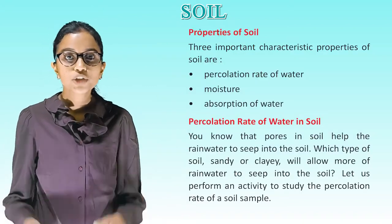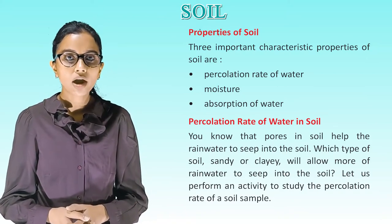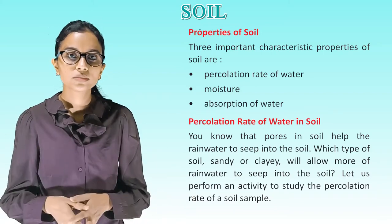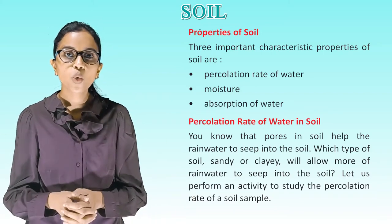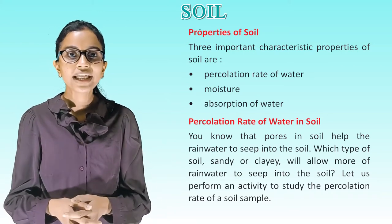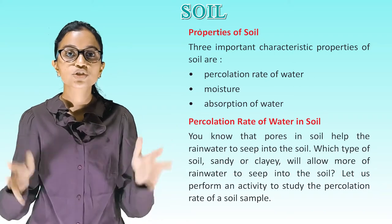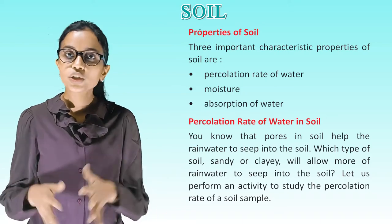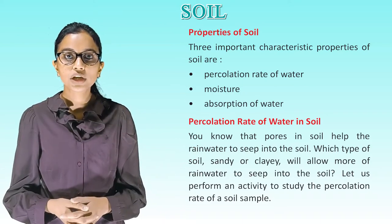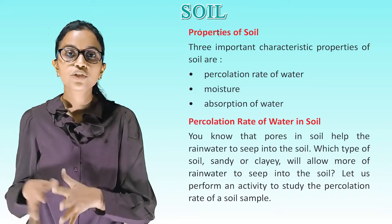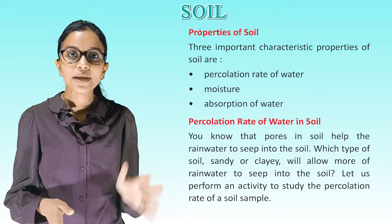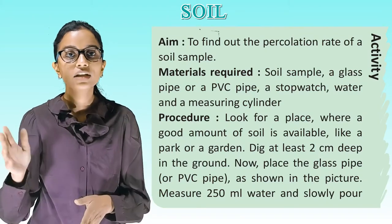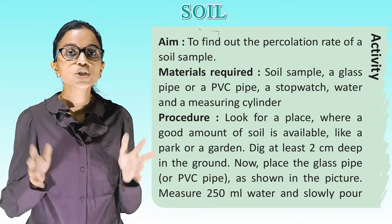Properties of soil: Three important characteristic properties of soil are percolation rate of water, moisture and absorption of water. You know that pores in soil help rain water seep into the soil. To study the percolation rate, we perform an activity: find a place with good soil like a park or garden, dig at least two centimeters deep, place a glass or PVC pipe, measure 250 ml of water, slowly pour it into the pipe, and start a stopwatch immediately. Note the time when all the water percolates into the soil.